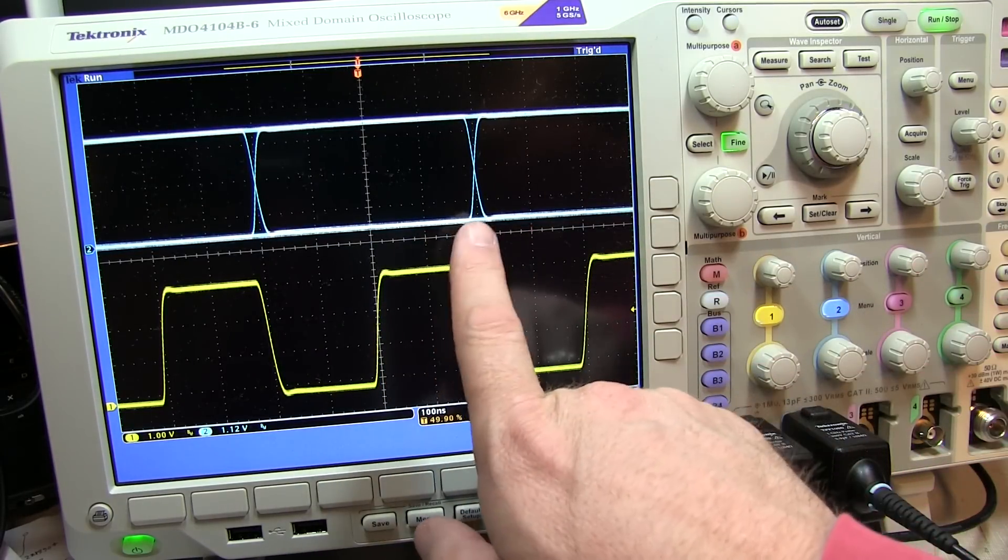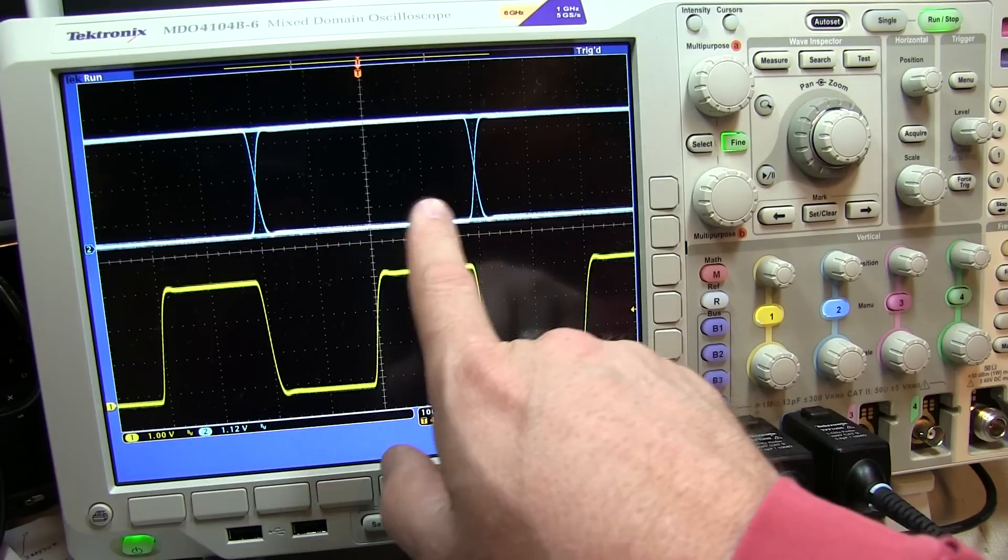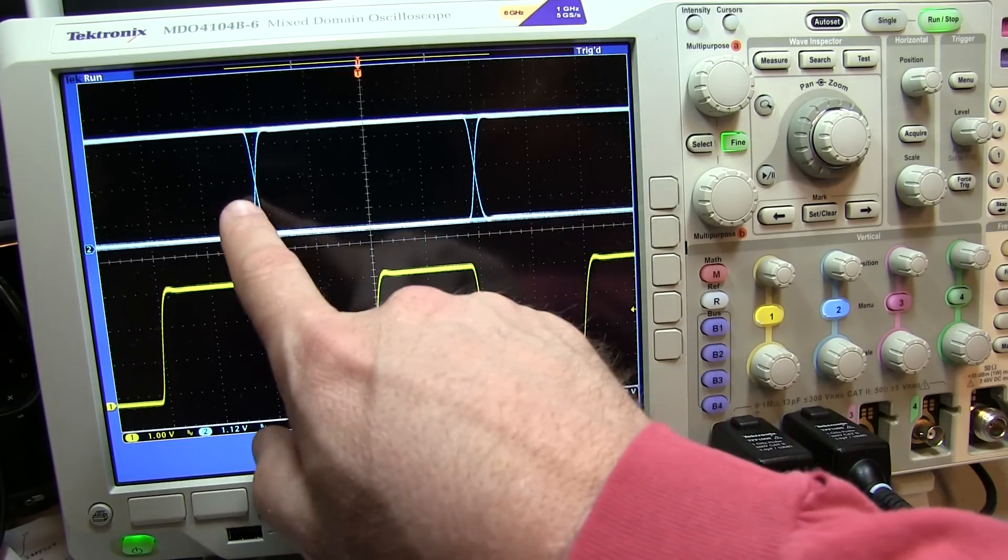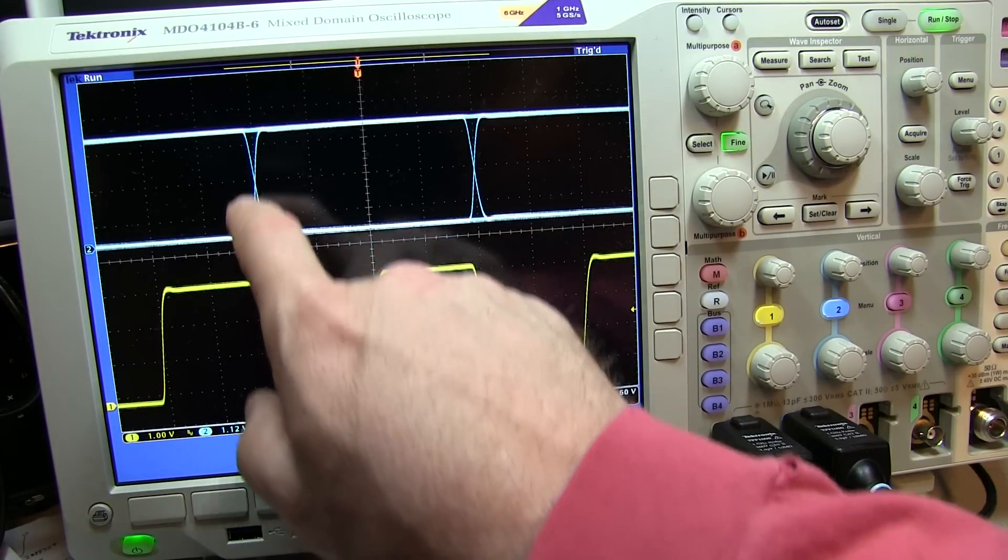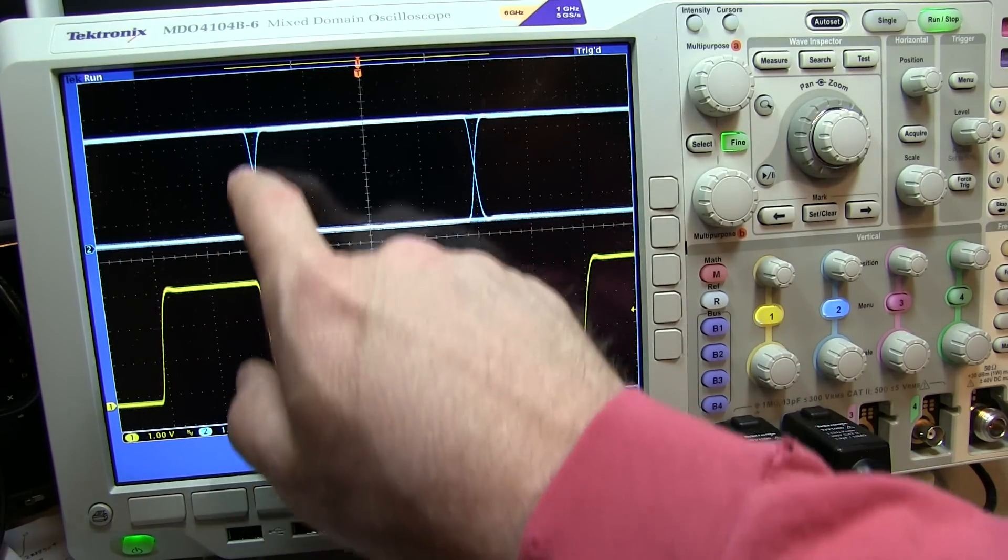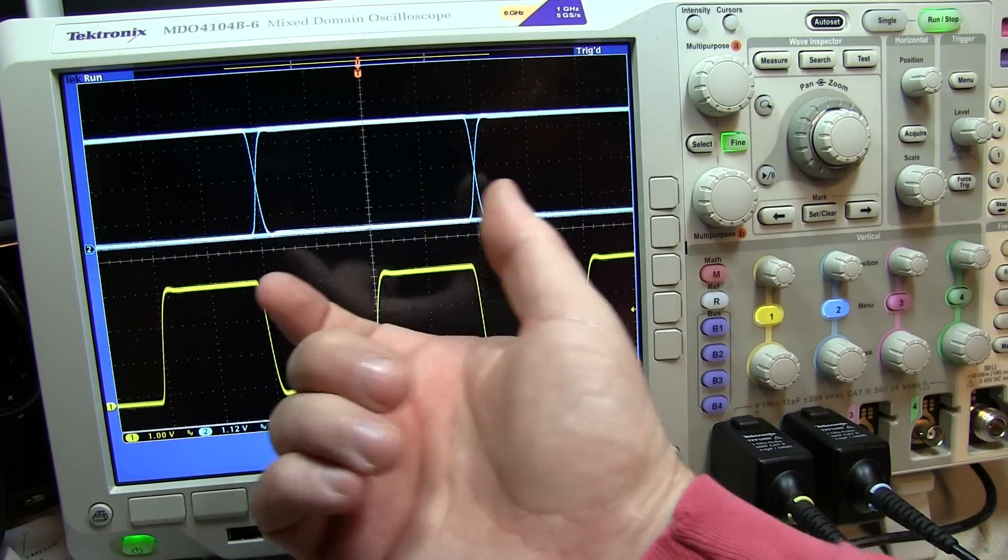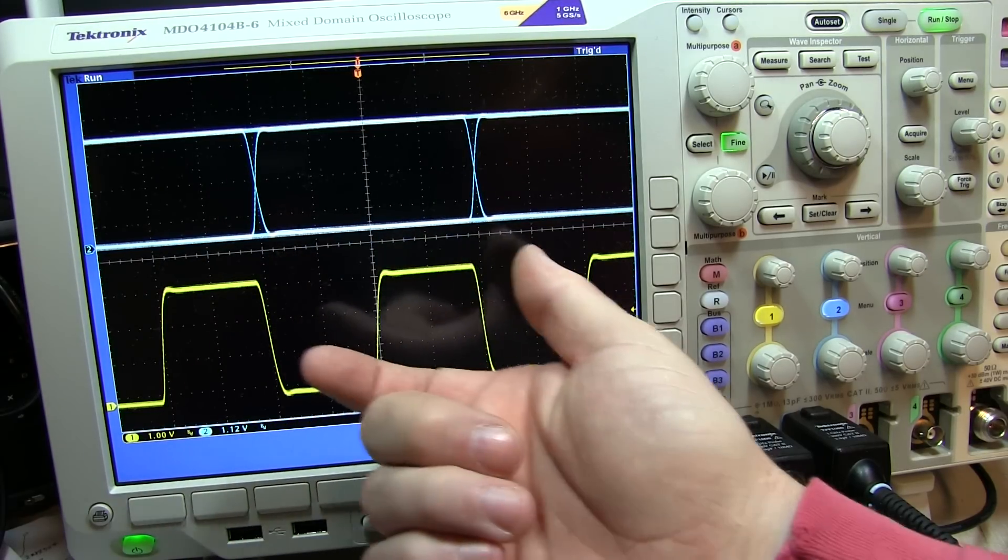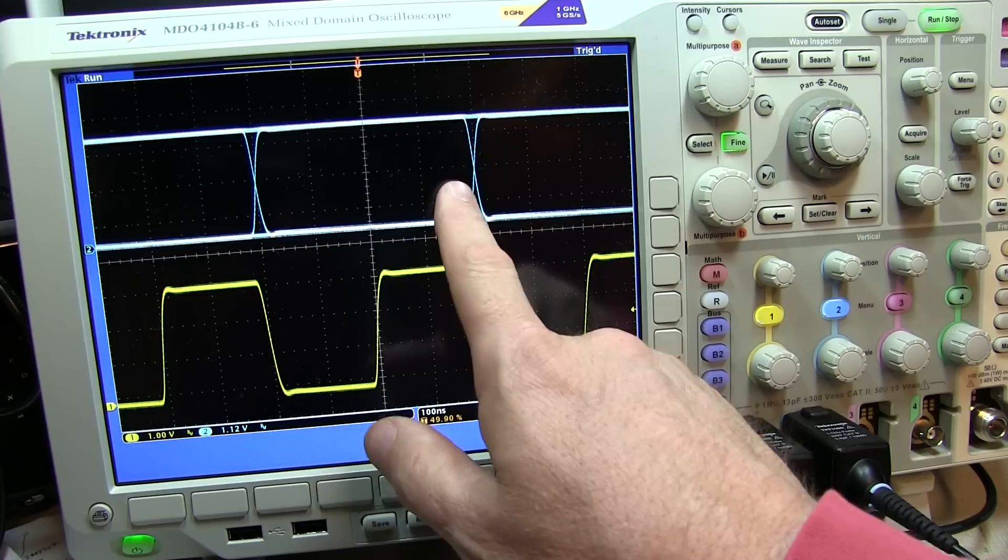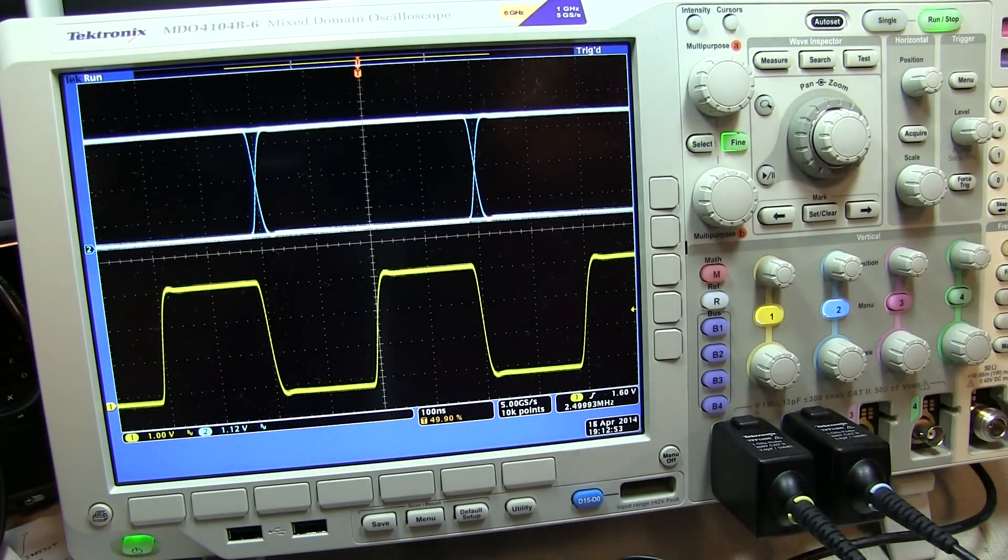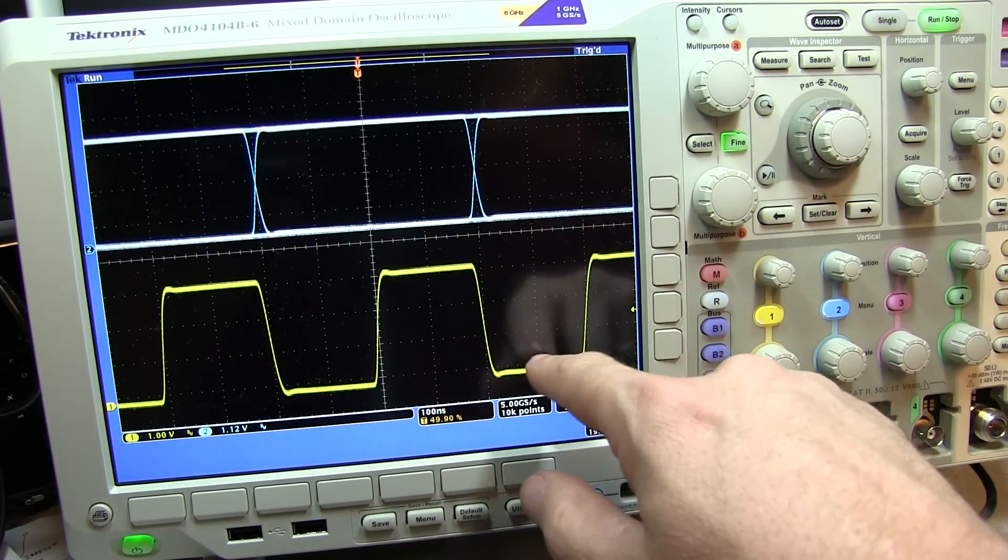So when we looked at the jittered eye, it looked like every edge was jittered. But if I was triggering on the data pattern itself, that rising edge or that falling edge would always be fixed. So all of the jitter that might be on that, in reality compared to say a clock signal, is all going to be transferred to the next edge, and that's going to look twice as wide.